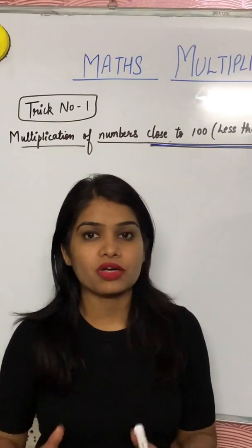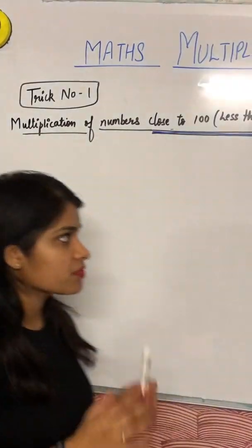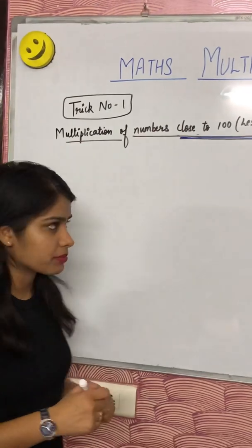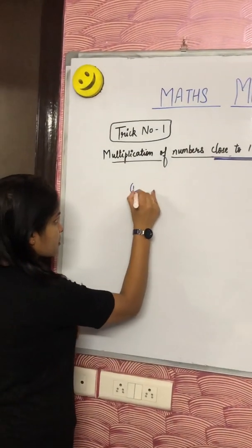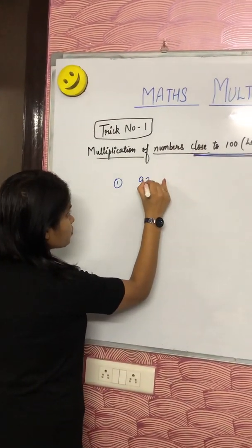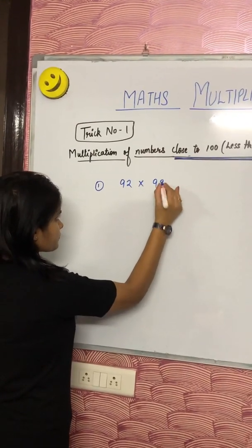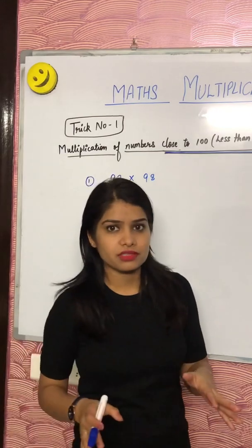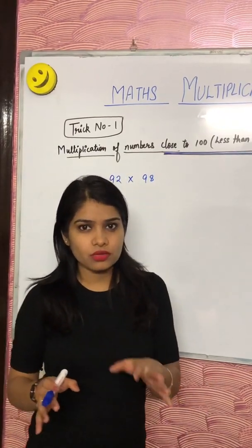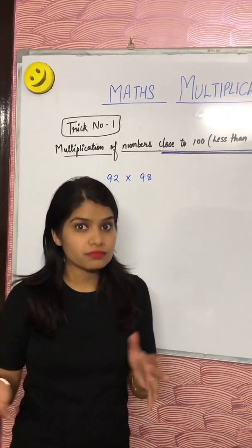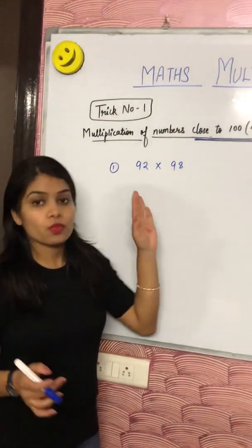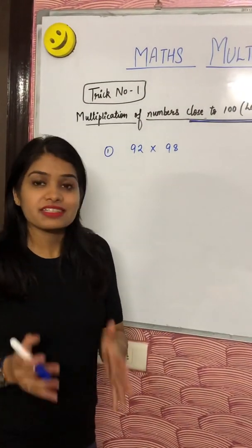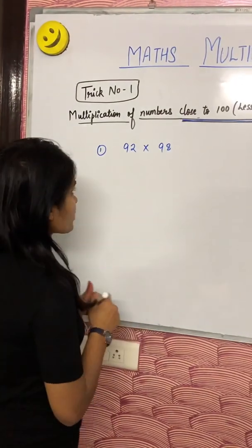Numbers which are close to 100 and which are less than 100. In this video, my first example is 92 into 98. Guys, when you do this multiplication normally, it will take you around 30 seconds or one minute, right? But with this trick, you can do it in seconds.